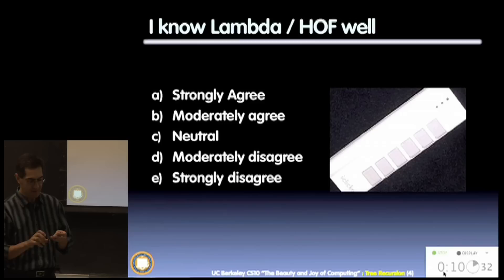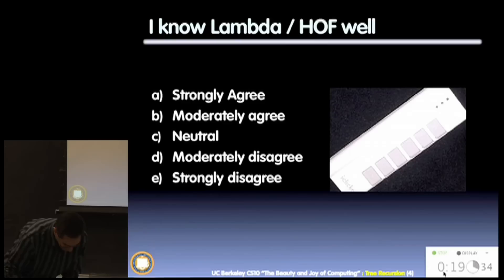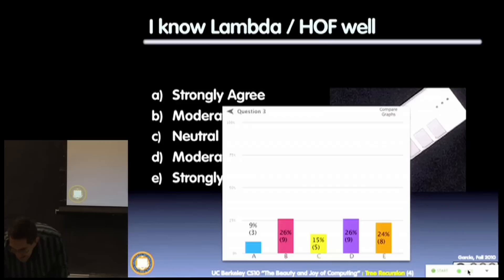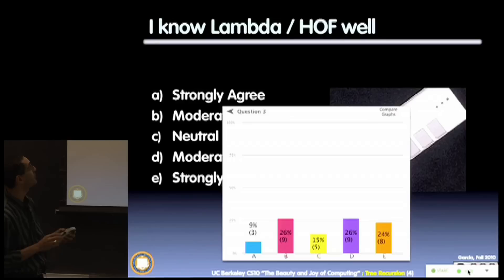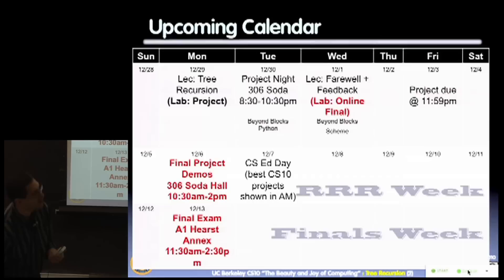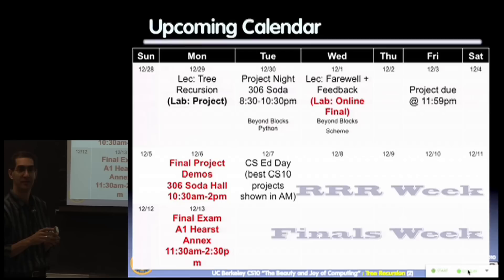By the way, you are being tested on Wednesday on these topics — this is where I really care the most that you have high scores. Results show about 33–34% feeling confident. Folks, we've got to get that number up — you're being tested on this Wednesday. I'm wondering whether Tuesday's project night might be better utilized as half project support, half review of lambda and higher-order functions.